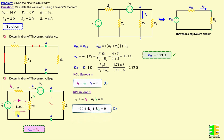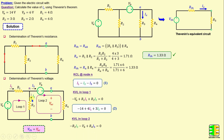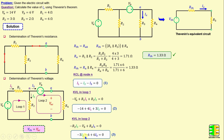Substituting numerical values gives: negative 14 plus 4 times I1 plus 3 times I2 equals 0. Applying Kirchhoff's voltage law in loop 2: negative R2 times I2 minus VB plus R4 times I3 equals 0. The current I3 is equal to 0 because we have an open circuit. Substituting values gives: negative 3 times I2 minus 6 plus 6 times I3 equals 0.